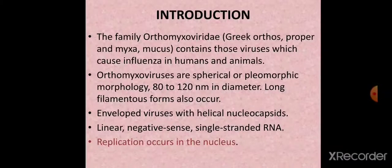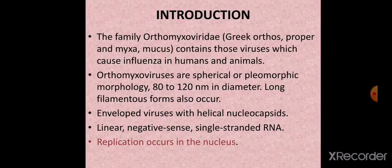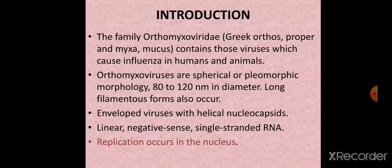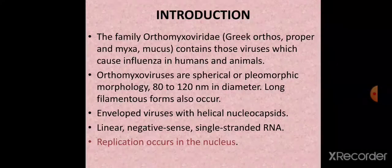Regarding the properties of orthomyxoviruses: talking about their shape, they are pleomorphic, ranging from spherical to long filamentous forms, with a diameter of approximately 80 to 120 nanometers. These viruses are enveloped with helical nucleocapsids.